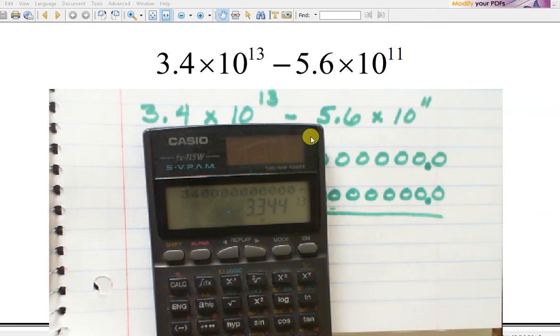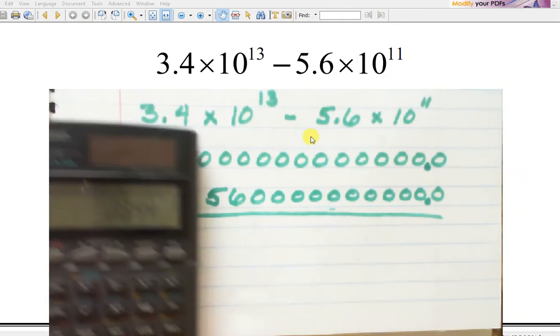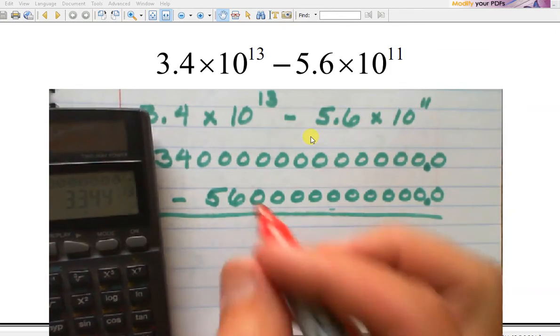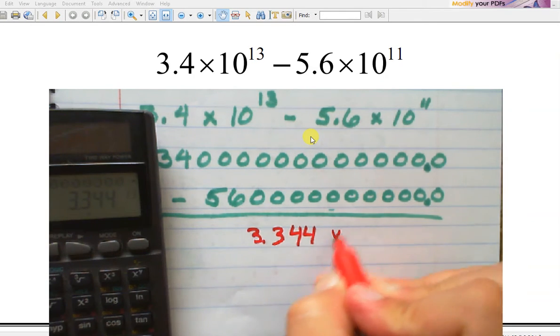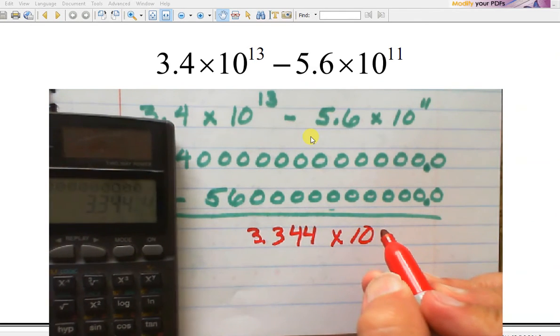Now, my calculator is actually doing 3.344 times 10 to the 13th. Three point... I'm telling you, calculators are better than doing it this method. But I gotta teach it.